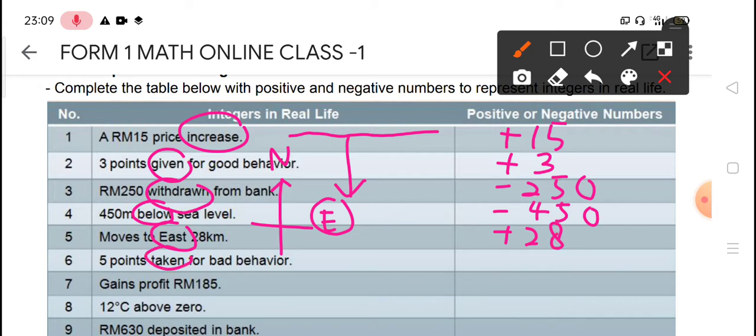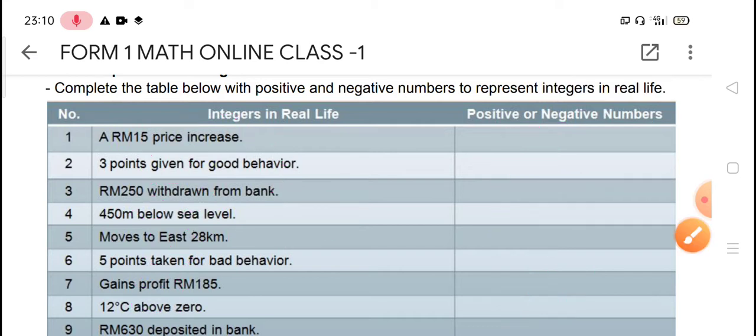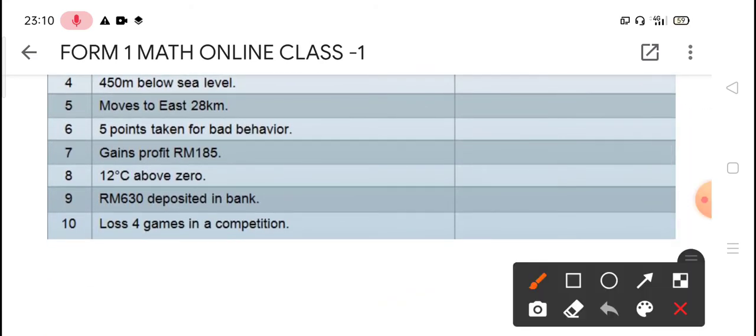Number six, five points taken for bad behavior means five points deduct minus five marks, so negative five. Number seven, gain profit RM185. Profit means you gain money, so this one is very good if you do business, positive 185. Next, 12 degrees Celsius above zero. Above, opposite with below. If below is negative, hence above will be positive, so this one is positive 12.